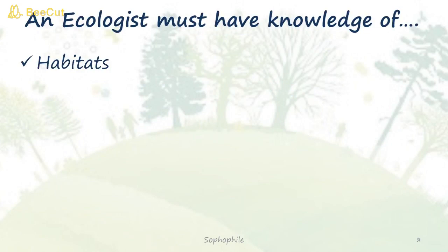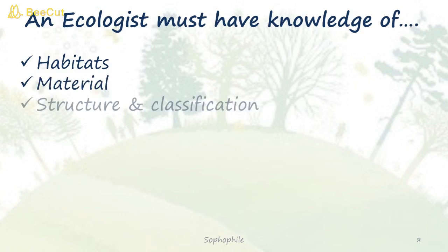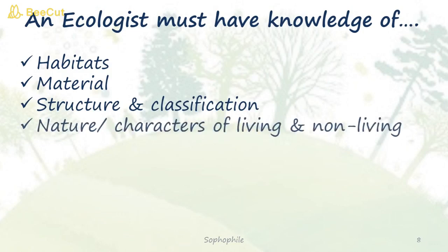What do we mean by an ecologist? A person who studies ecology is known as an ecologist. He must have the knowledge of habitats — that is, knowledge of organisms and the environments inhabited by them. He must know the material with which he works. He should be able to classify and know the structure of plants and animals. He must be aware of the nature of living and non-living factors, i.e., biotic and abiotic factors.